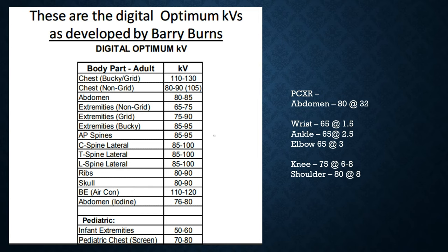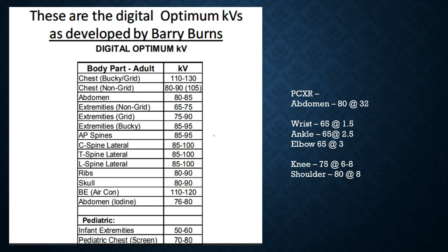Some techniques I am used to using: an abdomen around 80 at 32 is a good starting point, sometimes even 80 or 85 at 40 — patients seem to be getting bigger. For wrist and ankle, around 65 KVP with 1.5 to 2.5 mAs. An ankle is a little thicker than a wrist with more muscle or adipose tissue. The elbow is 65 at 3, and the knee and shoulder are generally around the same — about 6 to 8 mAs for the knee and 8 to 10 for the shoulder, depending on sex and muscle mass.